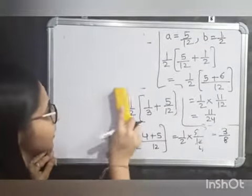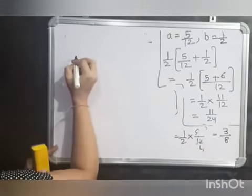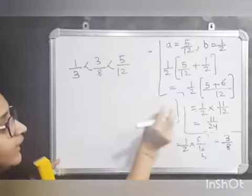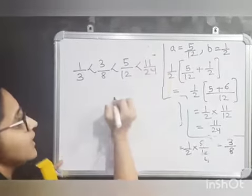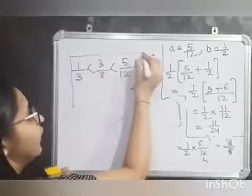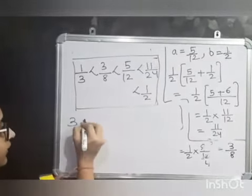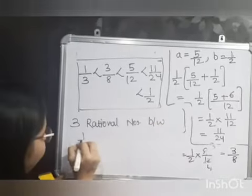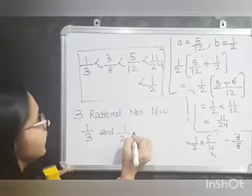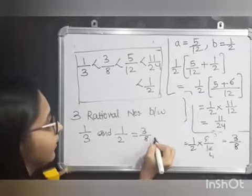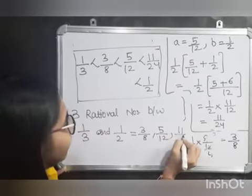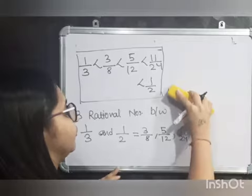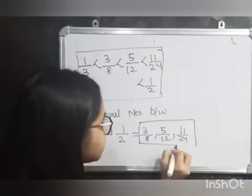Your final rational numbers are: first was 1 by 3, then 3 by 8, then 5 by 12, then 11 by 24, and last is 1 by 2. Your three rational numbers between 1 by 3 and 1 by 2 are 3 by 8, 5 by 12, and 11 by 24. This is your final answer. Thank you.